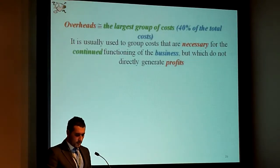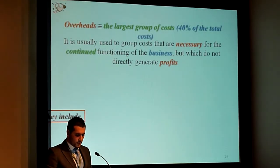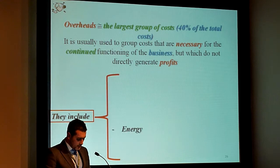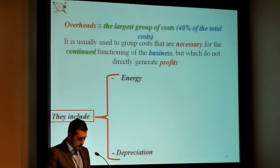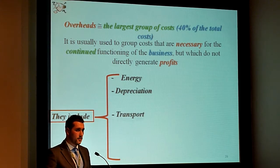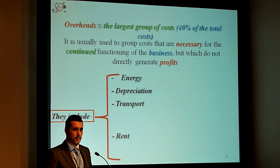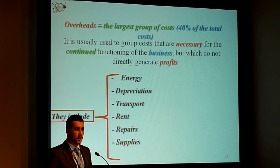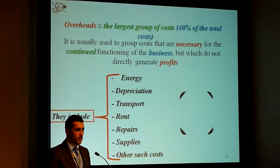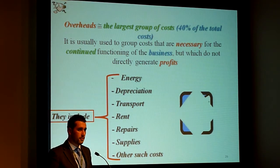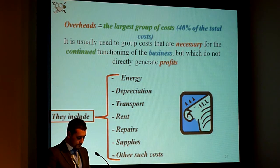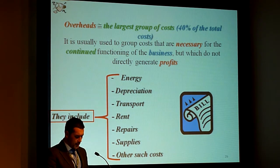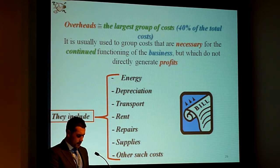As I said, overhead costs were about 40% of the total. Overhead costs are those costs which are necessary for the continuation of the business of the company, but which do not directly result in profits. Overhead costs, for example, include energy, land, repairs, and so on.